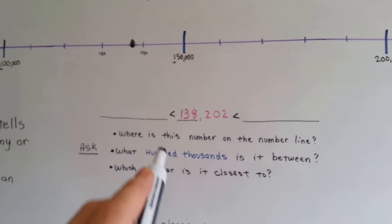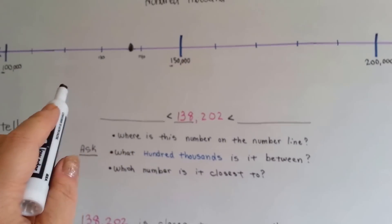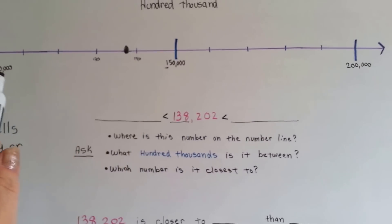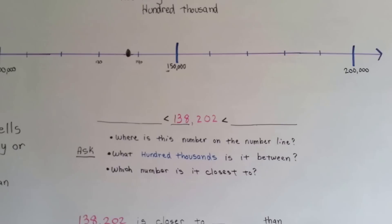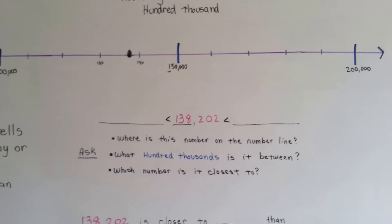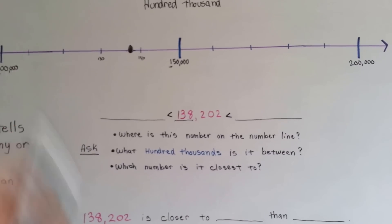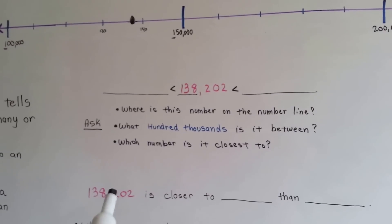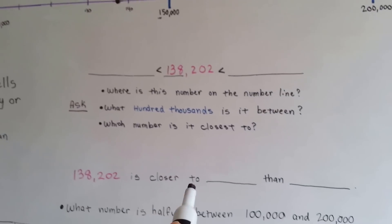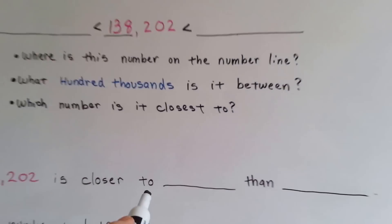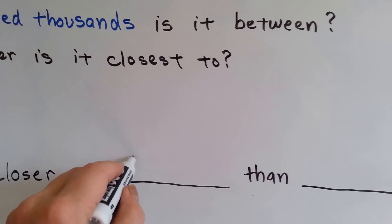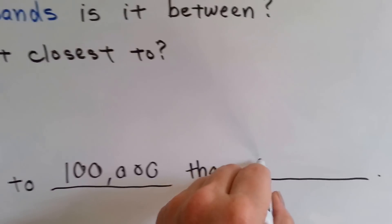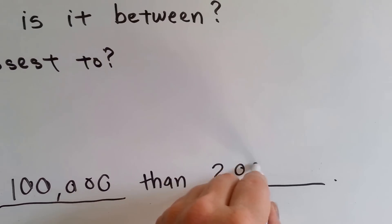What 100,000 is it between? It's between 100,000 and 200,000. Which number is it closer to? Is this black dot closer to this side or this side? It's closer to this side. So 138,202 is closer to 100,000 than 200,000.